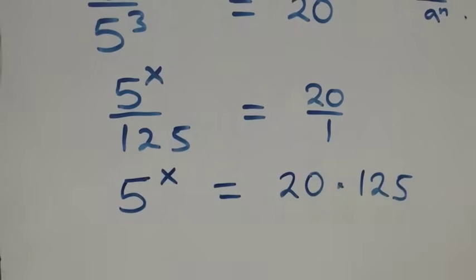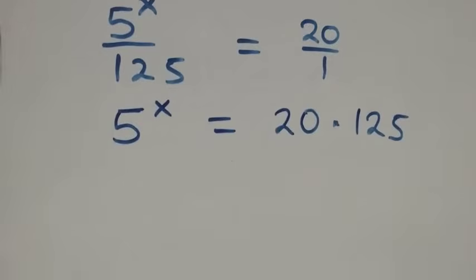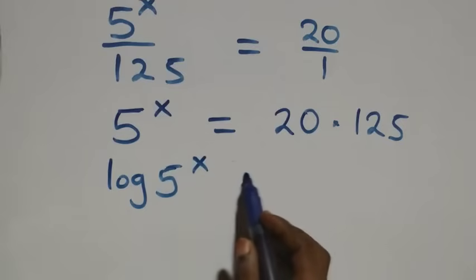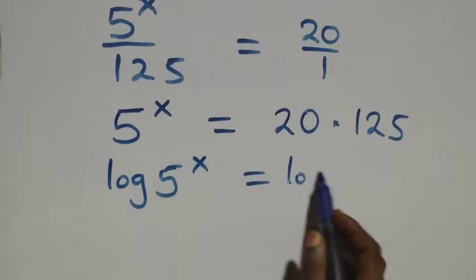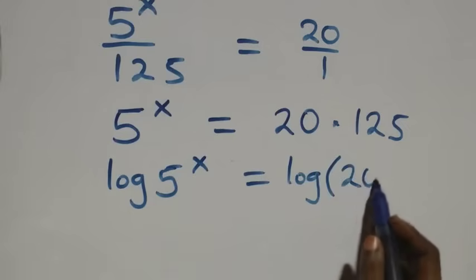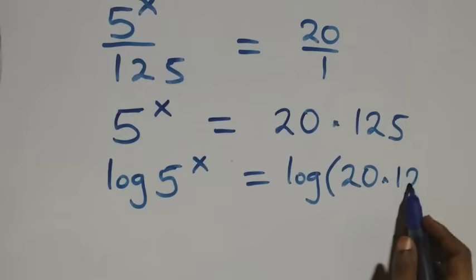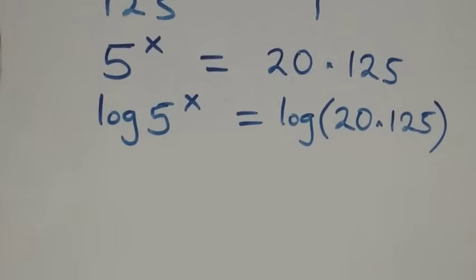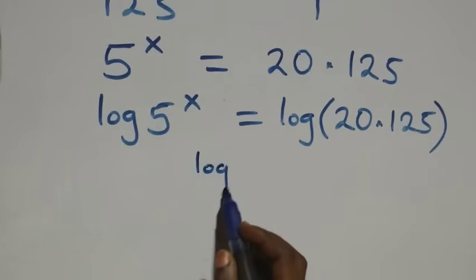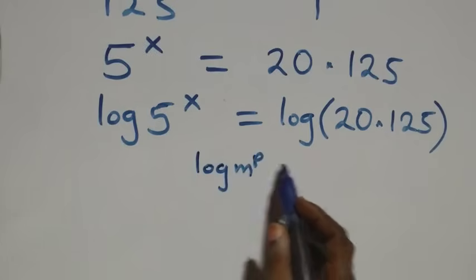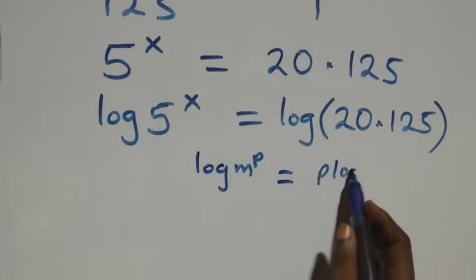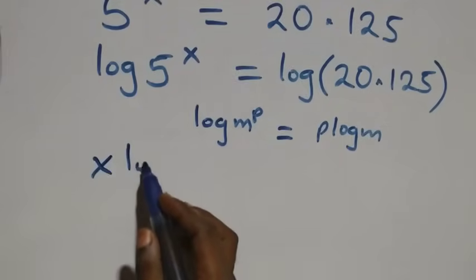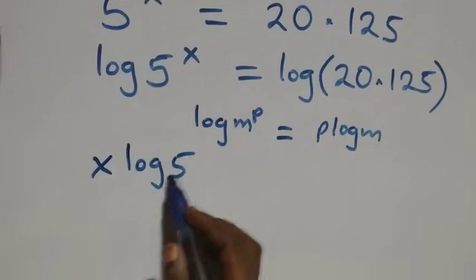The next step: we take the log on both sides. That is, we have log five raised to power x equals to log twenty times one hundred and twenty-five. We apply the power rule of logarithms: when we have log m raised to power p, it is the same thing as p log m. So what we have becomes x log five equals to log twenty times one hundred and twenty-five.